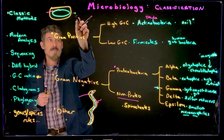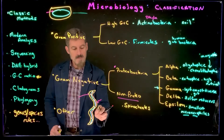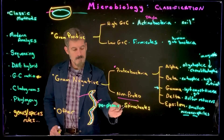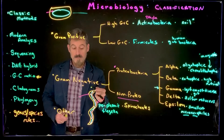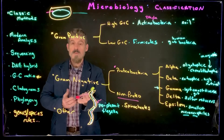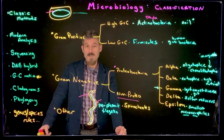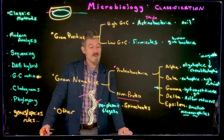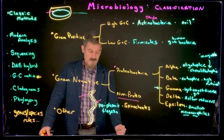The periplasmic flagella makes spirochetes very good at moving through solid tissues, which is why when you're infected with a spirochete, it's difficult to treat them with antibiotics — they're not very localized. They tend to spread throughout tissues. Lyme disease, for example, is caused by a spirochete.